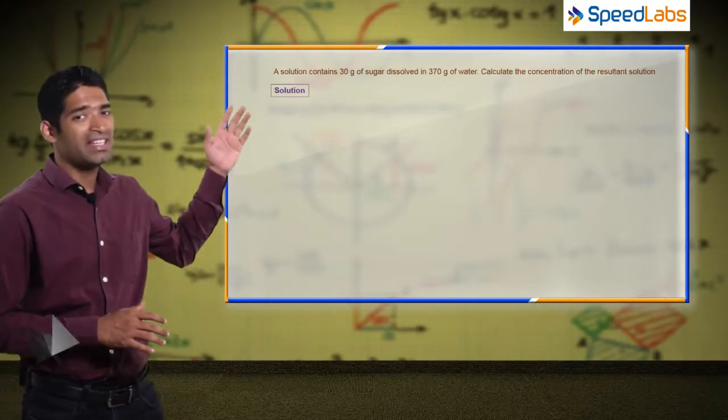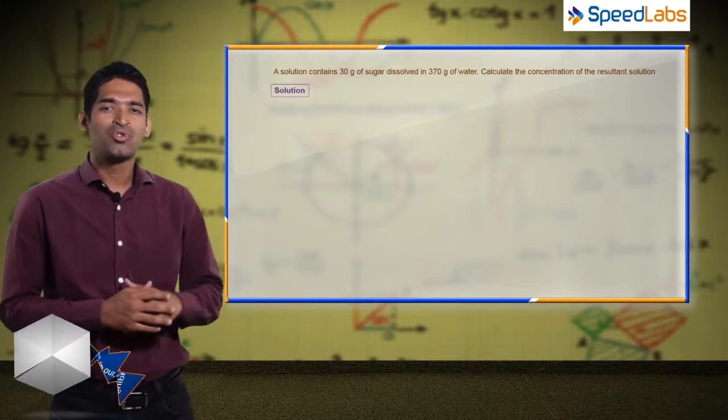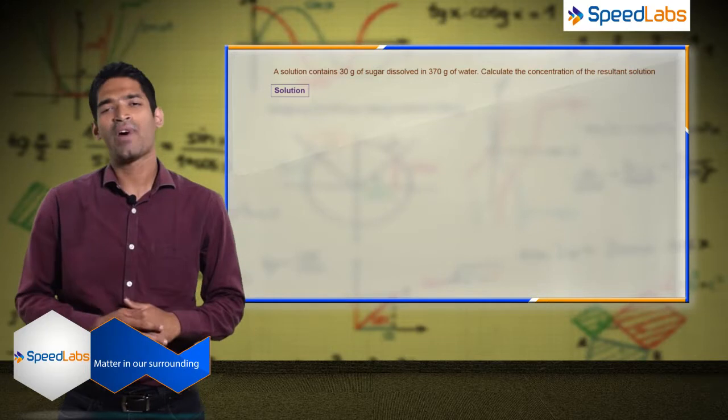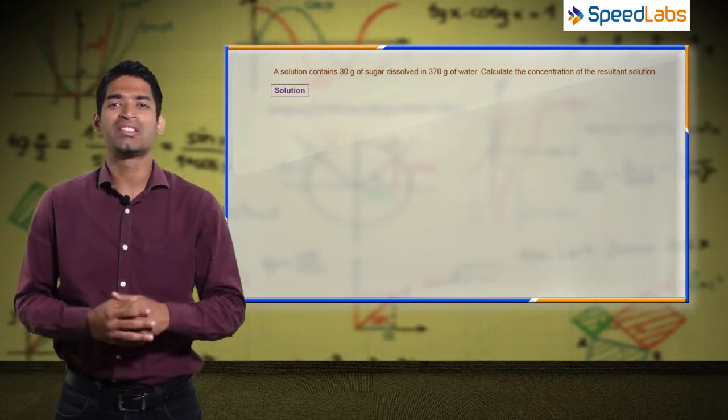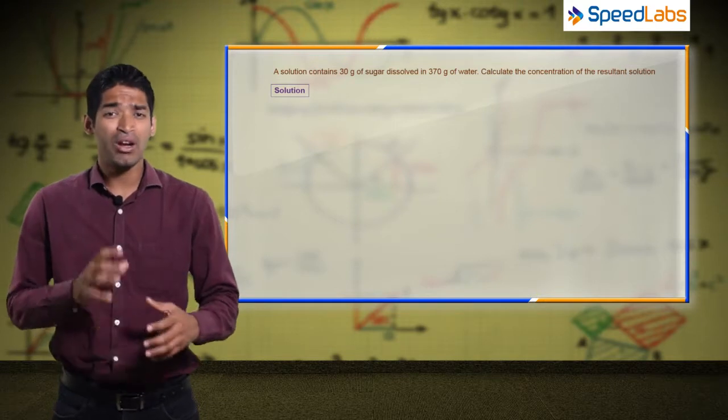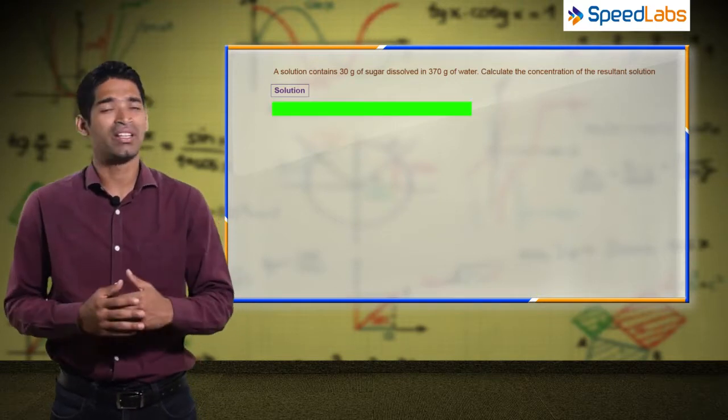This question says that 30 grams of sugar is mixed in 370 grams of water, and you have to find out the concentration of the resultant solution formed. Now let us understand what is solute and solvent here.